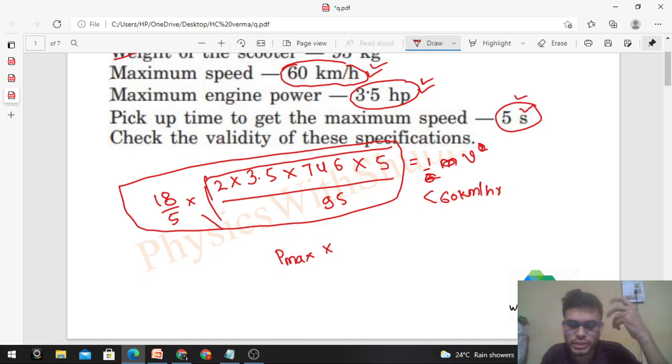P max into 5, if the power of the scooter is P, then P into 5 is the energy supplied by the scooter in five seconds. You have taken this power in joule per second, so this much joule. That is equal to half of m into v square. So half of m, that is 95, into v square.